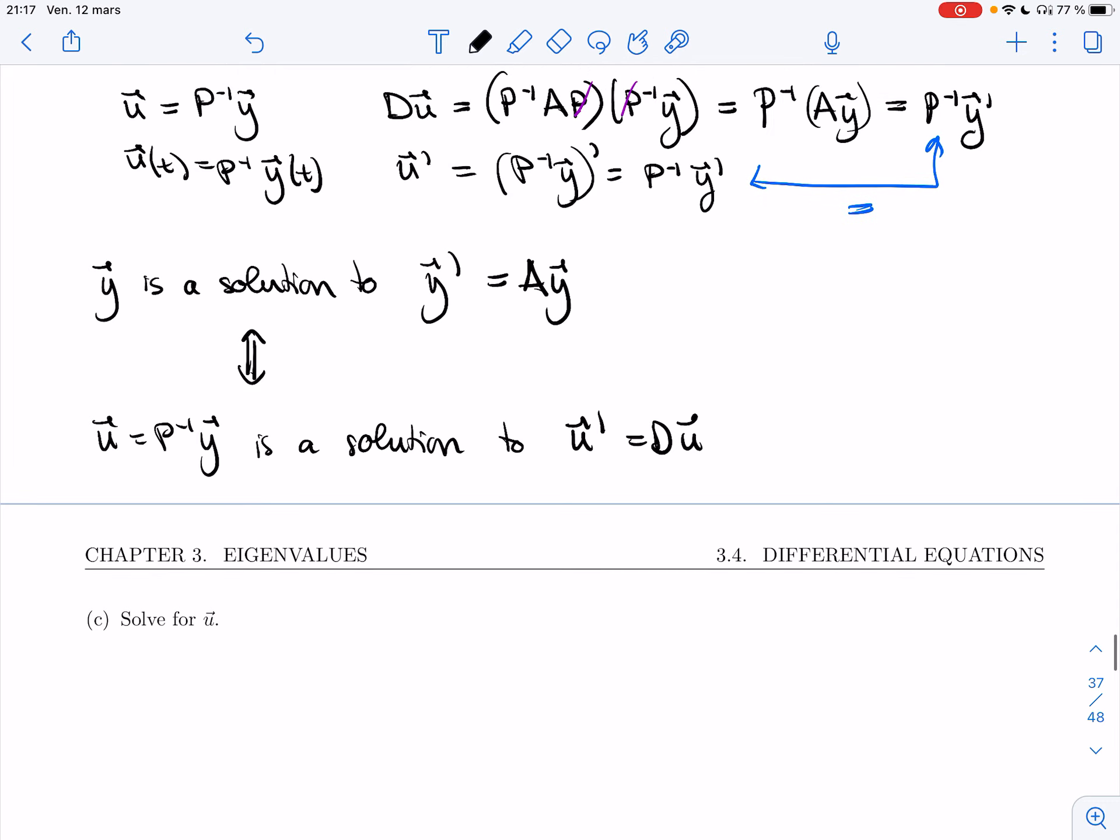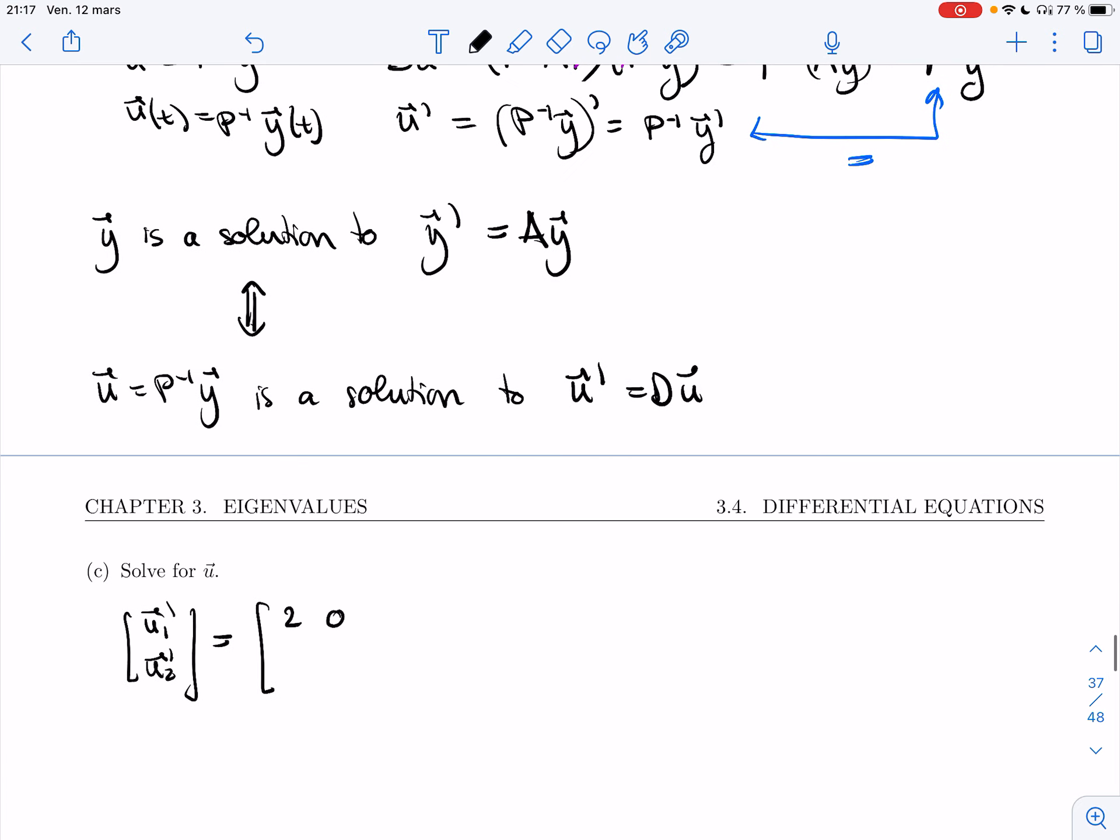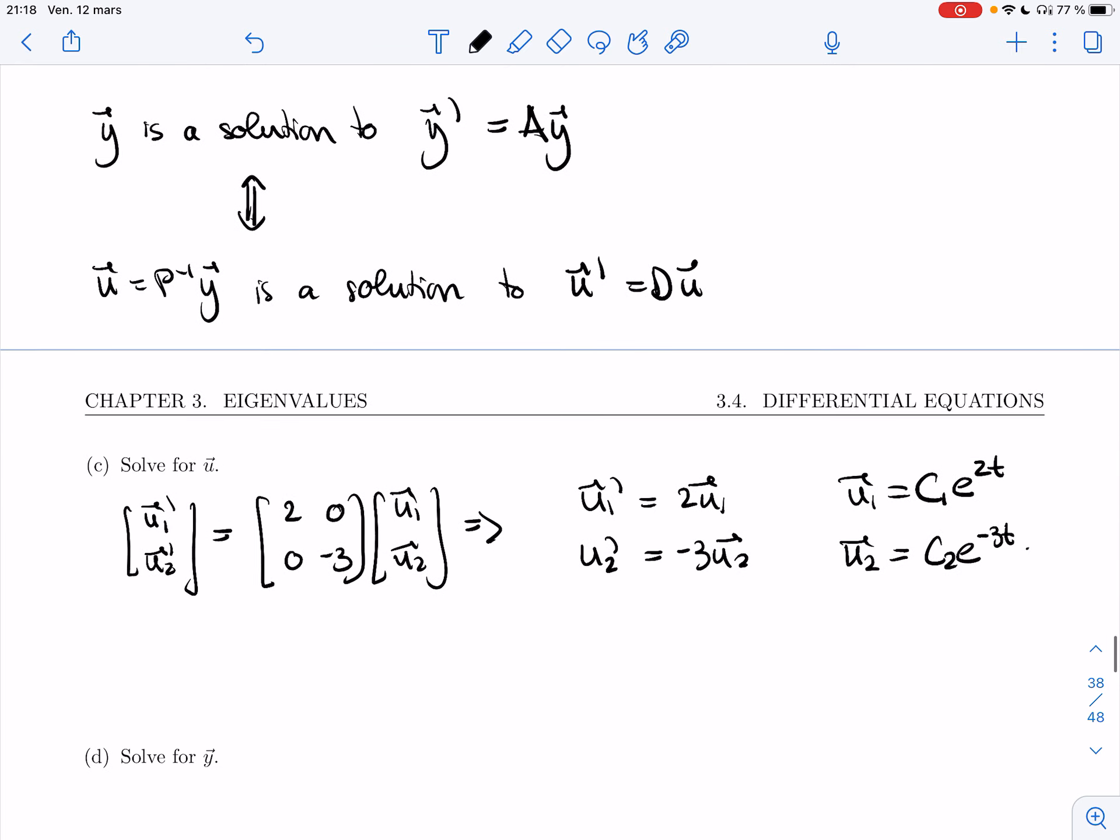All right. So let's solve for u. So we have u1, u2 prime equals D. That's 2, 0, 0, minus 3, times u1, u2. And so I get that u1 prime is 2u1, which means that u1 is c1e to the 2t. And u2 prime is minus 3u2. And so u2 is c2e to the minus 3t.